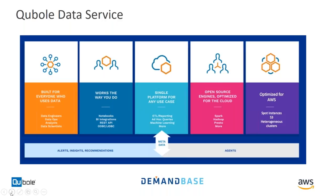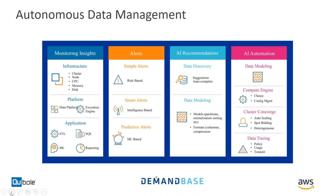We're optimized for the cloud — we run on AWS, and our system of record, as David mentioned, would be S3. As you use the platform, the metadata generated is captured and we use it to make the platform autonomous. We rolled out something called AIR, which stands for Alerts, Insights, and Recommendations. Insights provide information about what's happening at the infrastructure, platform, and application level. Alerts point you to situations worth investigating. Recommendations are the output of all that analysis to help you become more productive and optimize for both performance and cost.